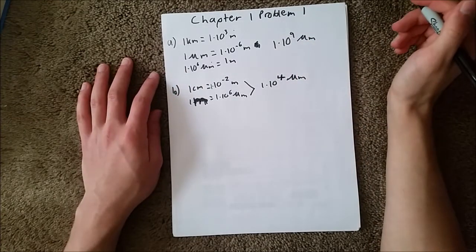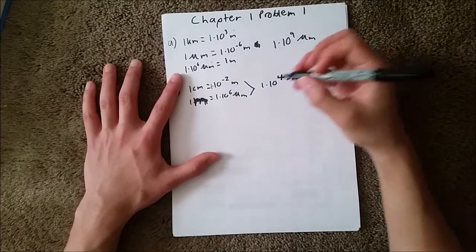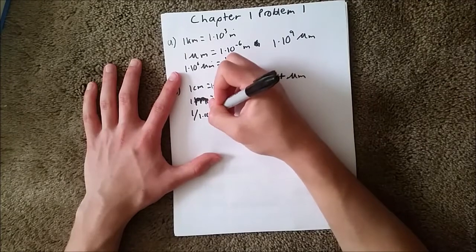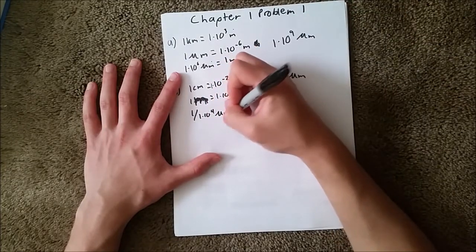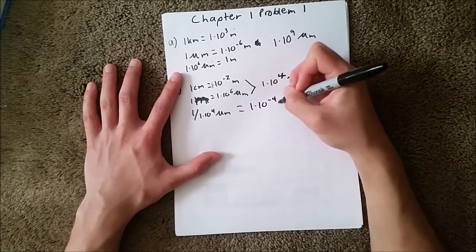But, it asks what fraction. So, we need to put this over one, so this is going to be 1/(1×10⁴) micrometers, and when that's simplified, that equals 1×10⁻⁴ micrometers.